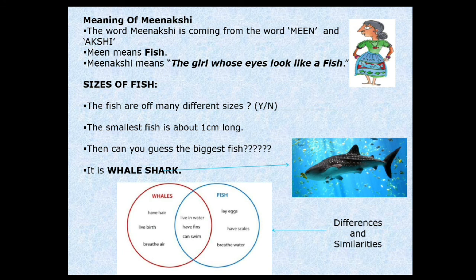Let's see what is the difference between whales and fish. Whales have hair and they give live birth to babies. And just as we humans breathe air, whales also breathe air. Whereas fish lay eggs and have scales on top of them. Whales have hair on top of them, and fish breathe water.